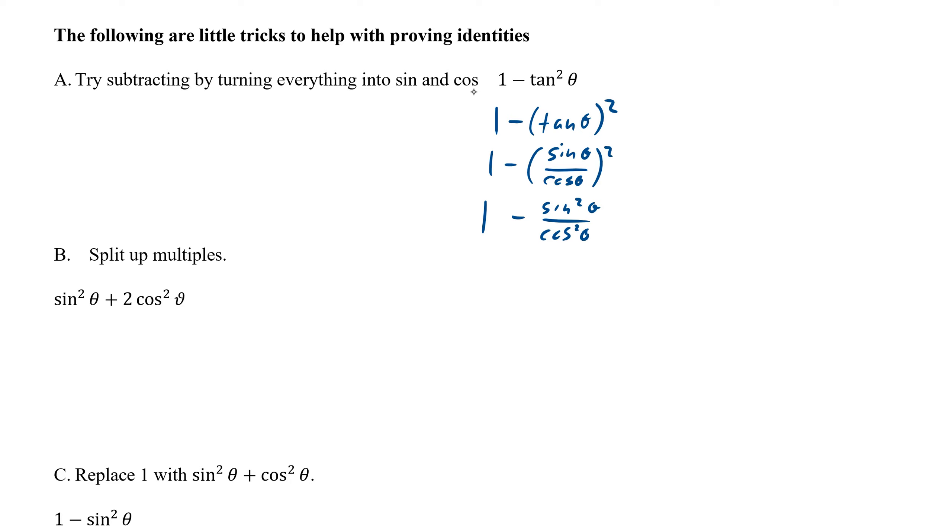Looking at 1 minus tangent squared theta, we don't really know what to do. Yeah, there are Pythagorean identities for secant, but this is another trick. What we can now do is add it because we have made a fraction. This would work with cosecant or secant or cotangent as well, you make it into a fraction.